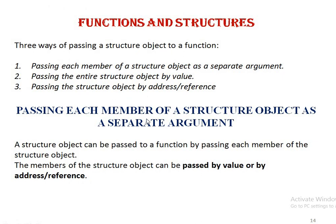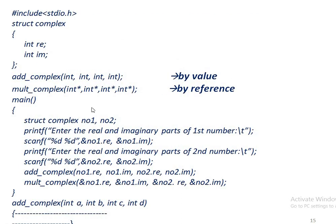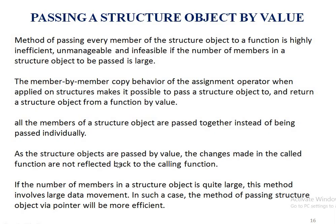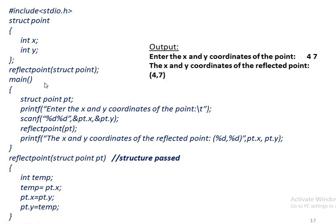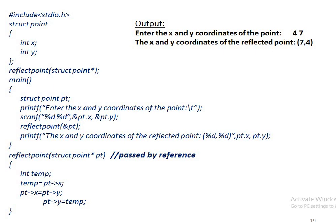Structures can be passed to functions either by individual member variable or by the entire structure, using call-by-value or call-by-reference. Here, function reflect_point accepts an entire structure of type struct point. Inside reflect_point, the two member variable values are swapped using a temp variable. However, since this is call-by-value, the member variables pt.x and pt.y are only modified locally. Back in main, printing them shows they are unchanged. Using call-by-reference with a pointer, the values are permanently modified — output shows 7 then 4 after swapping.